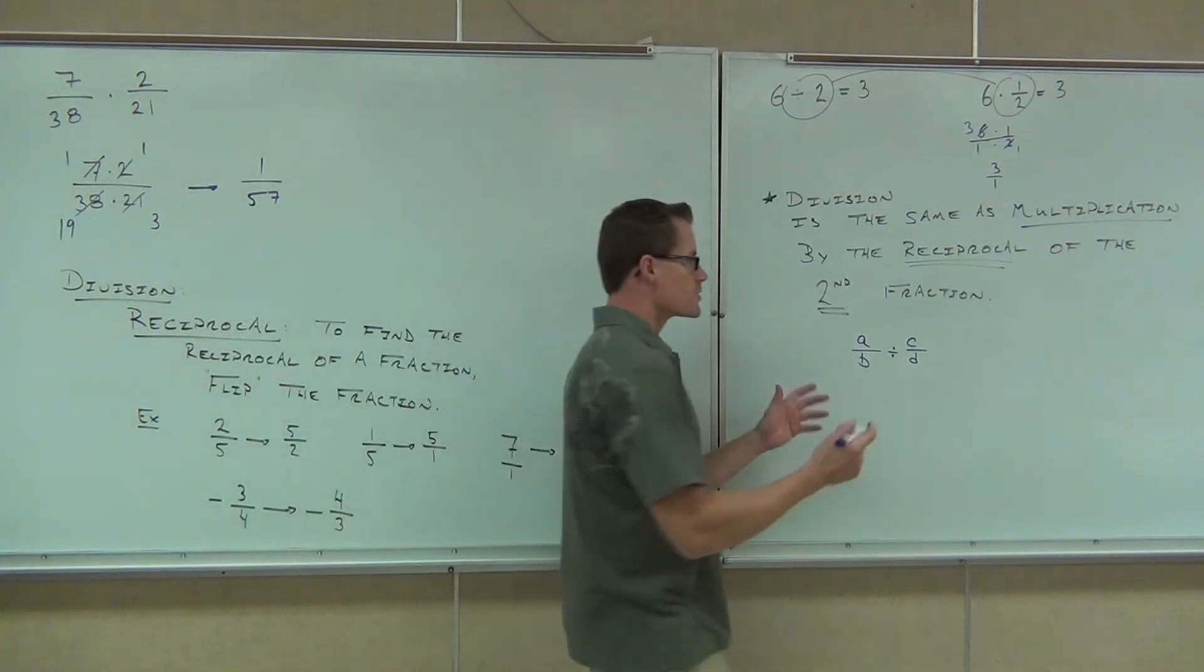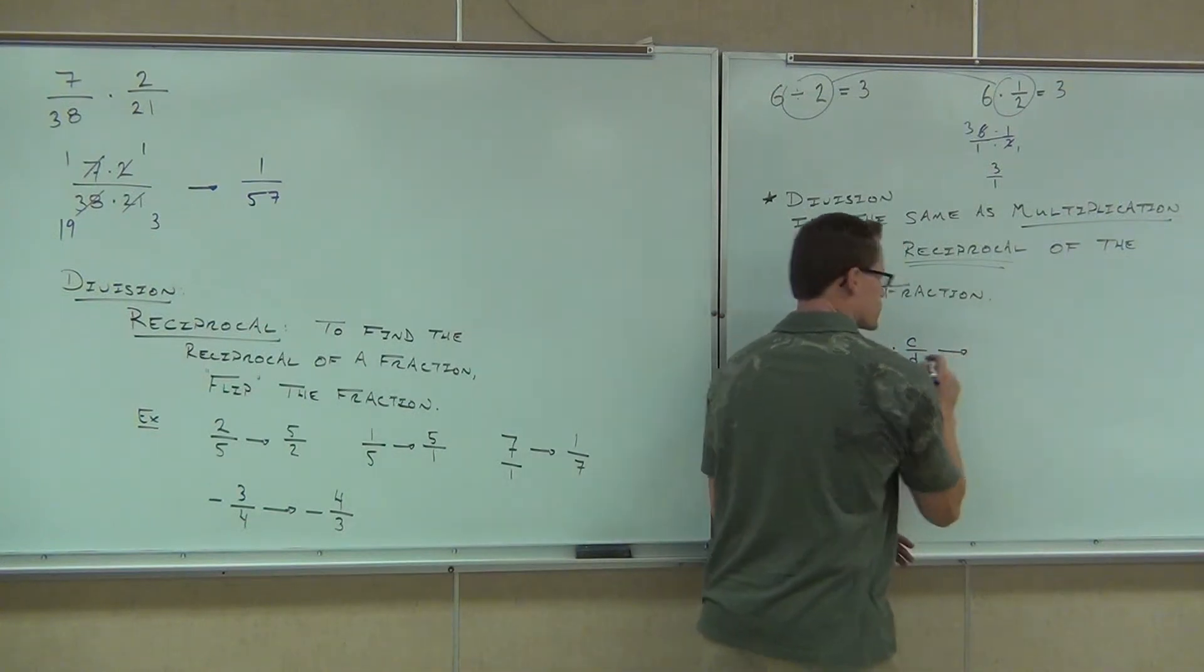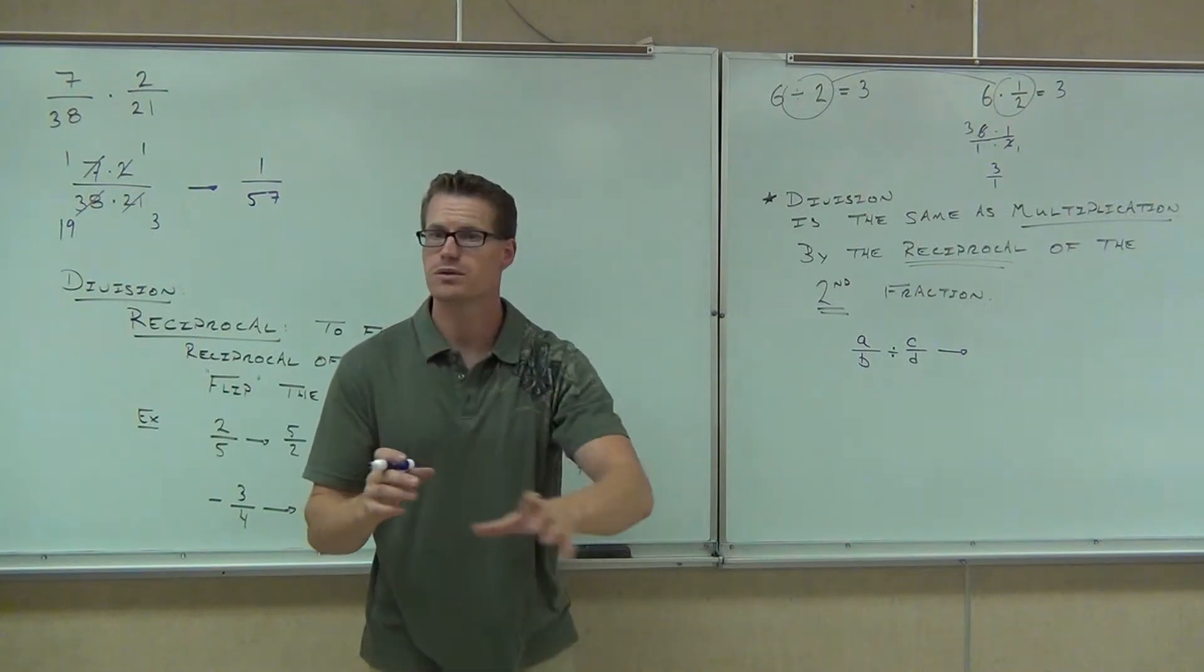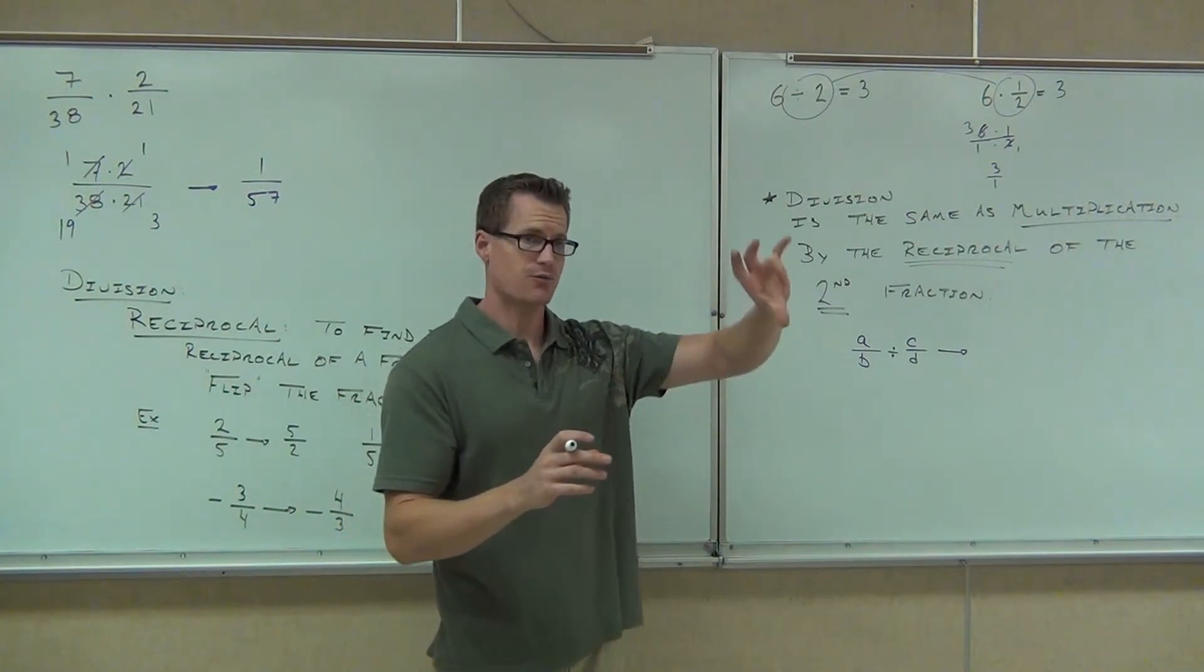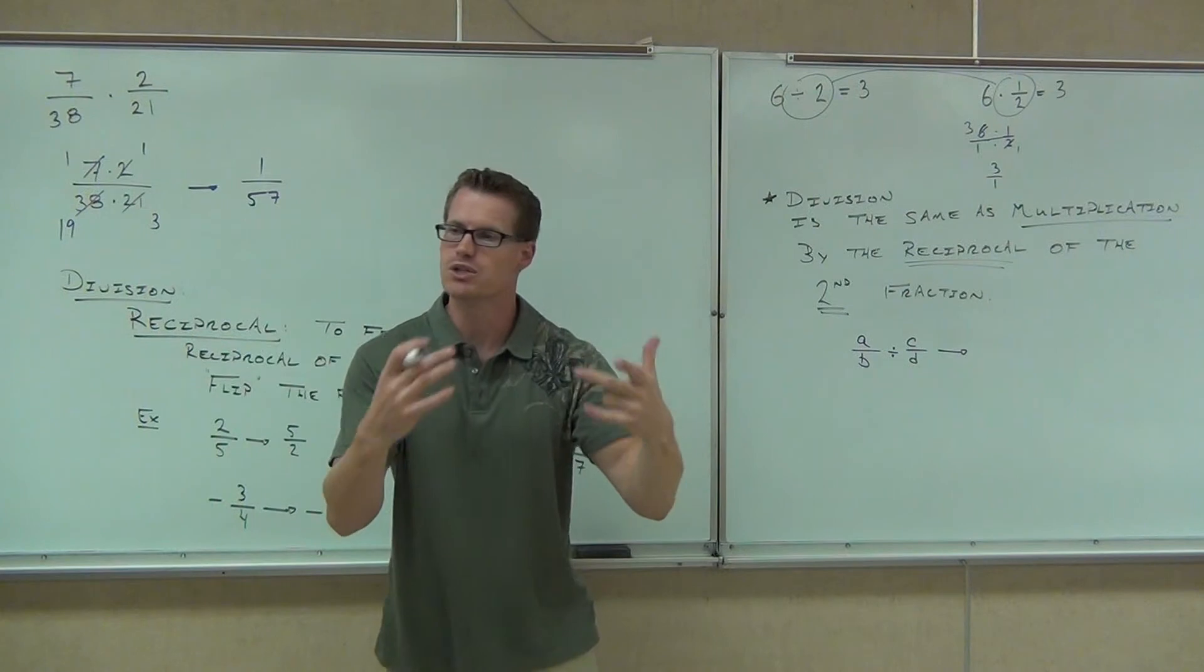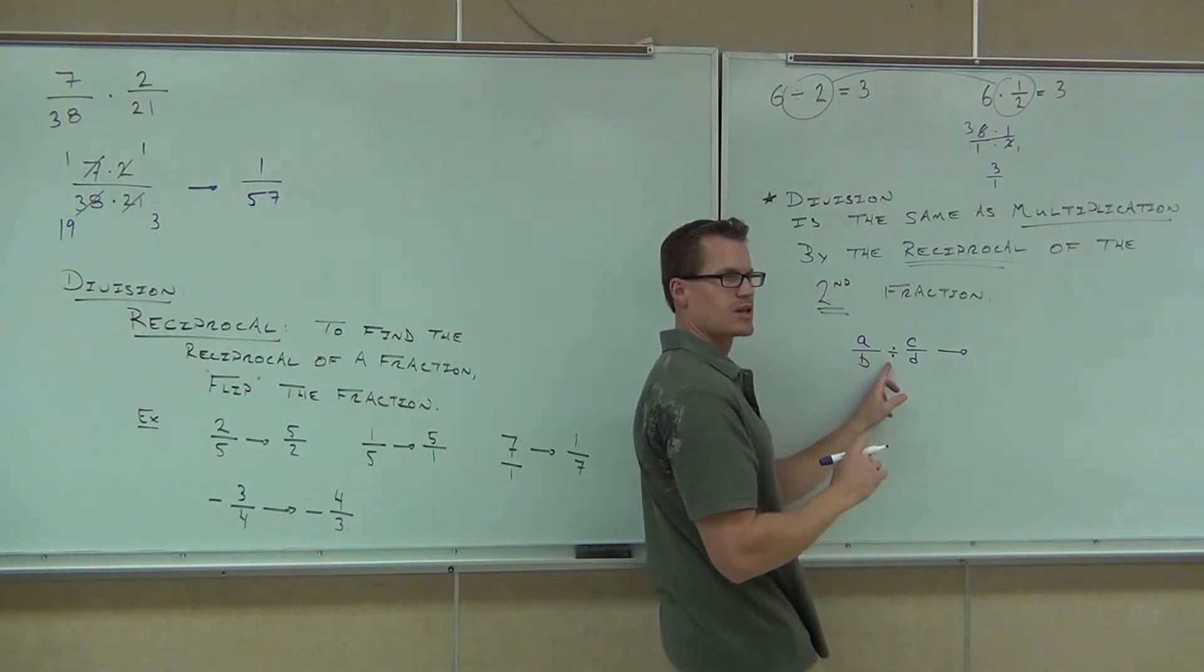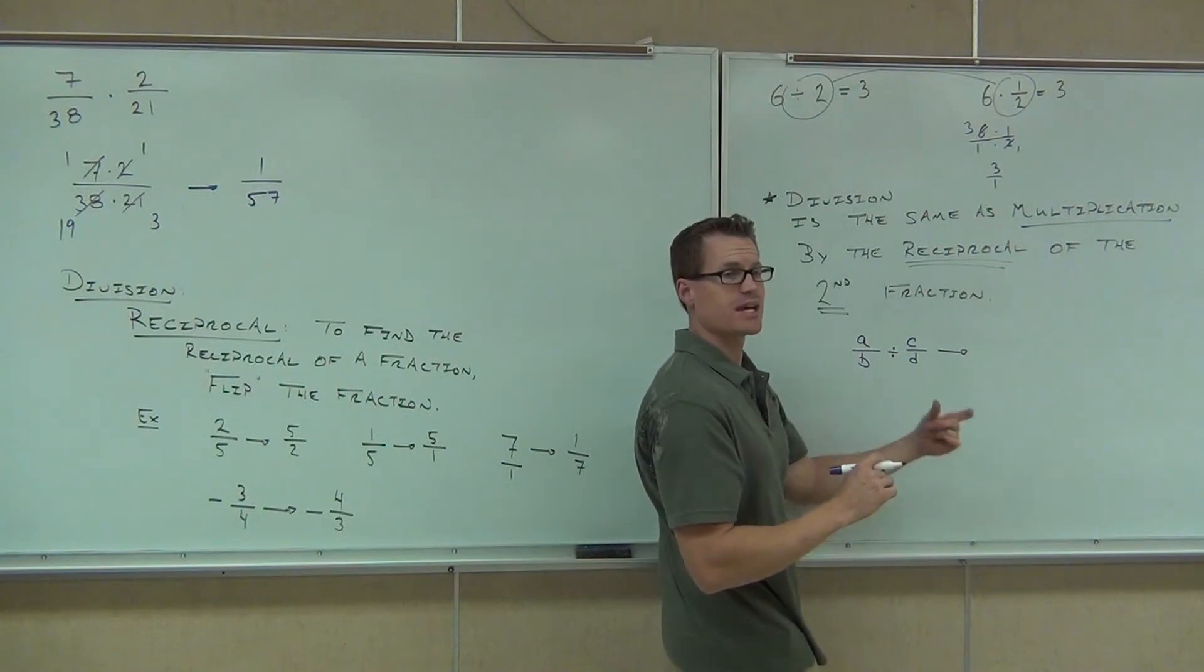So what we do is instead of going straight for the division, we kind of flank the problem. We go, okay, we're going to go around the division. We're going to take the division out of my expression. And how we do that is we say, I know for a fact that division is the same thing as multiplication by the reciprocal of the second fraction.